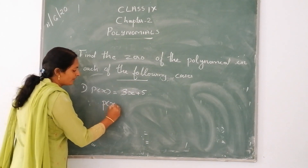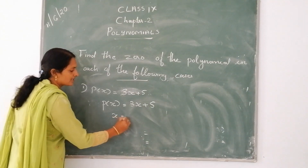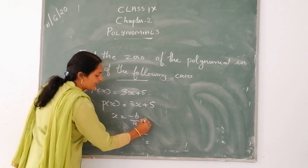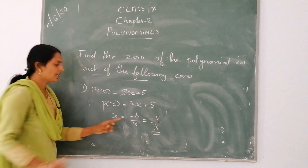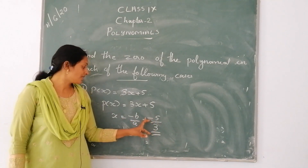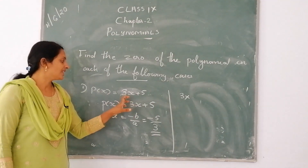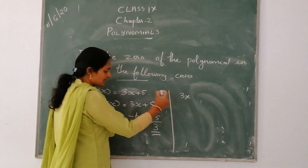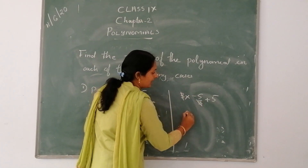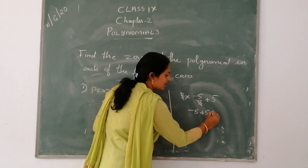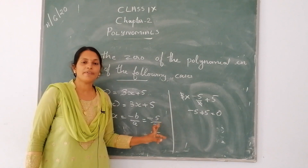Consider the polynomial p of x equal to 3x plus 5. The value of x is equal to negative b by a, that is negative 5 divided by 3. That is the zero of the polynomial. The zero of this polynomial is minus 5 by 3. To check, we put x as minus 5 by 3. Cancelling 3 and 3, remaining minus 5 plus 5, that is equal to 0. Therefore, the zero of the polynomial is negative 5 by 3.